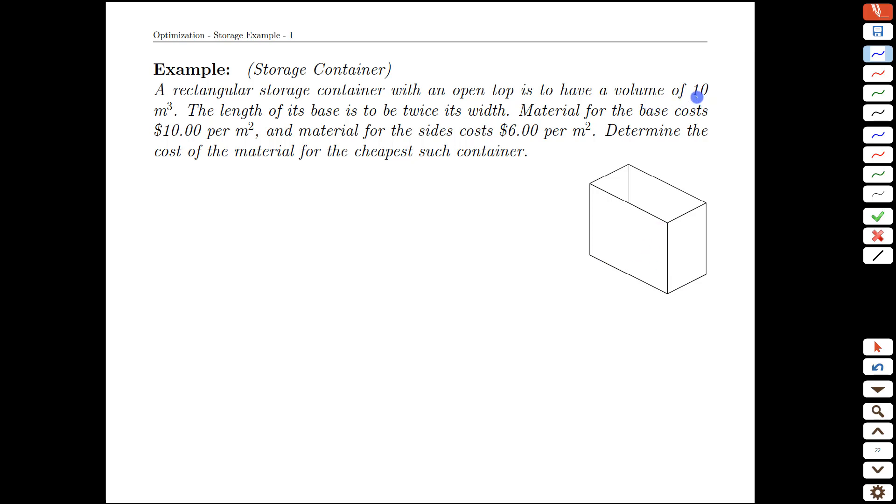We have a target volume. In other words, we want to build a box of a certain size, 10 cubic meters, which is quite large. The length of its base has to be twice its width. That'll be an important constraint.